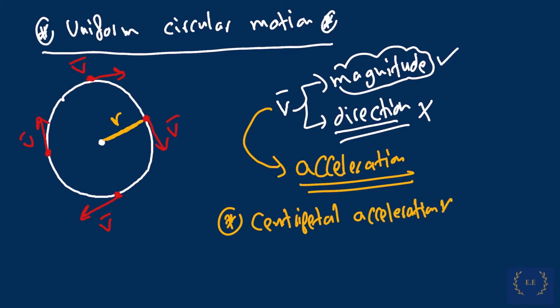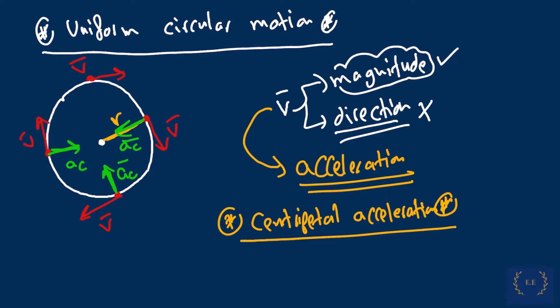The centripetal acceleration is the acceleration towards the center of the circular motion. If you take the velocity vector at any point in this motion, you'll notice that the vector is a tangent, while the acceleration is pointing towards the center of this movement at any single point in time — they form literally 90 degrees with respect to one another. So the velocity vector is at 90 degrees with the acceleration vector.